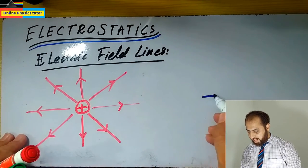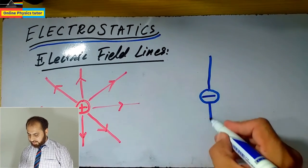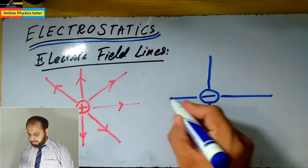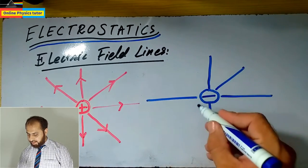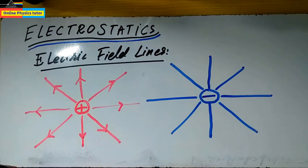For negative charge, we draw the field lines directly radially inward. They have direction inward towards the charge.